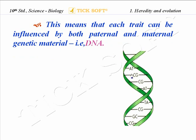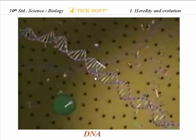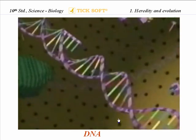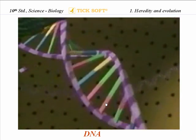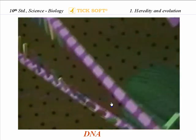If we look at ourselves, we can find that few of our characteristics are inherited from our father and few from our mother. For example, our skin color — we may be fair, which is inherited from our father, while the mother may be slightly dark. Characteristics like tallness may be inherited from the mother. This blending of characteristics acquired from both parents occurs through genetic material, that is DNA, referred to as paternal and maternal character.